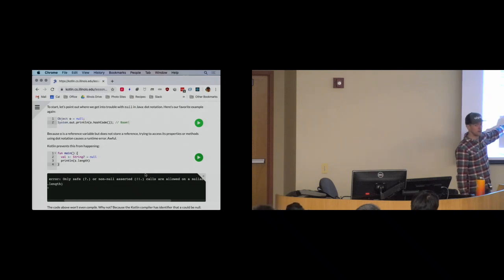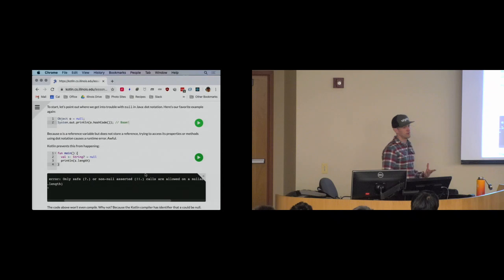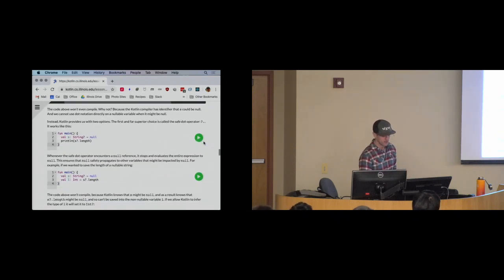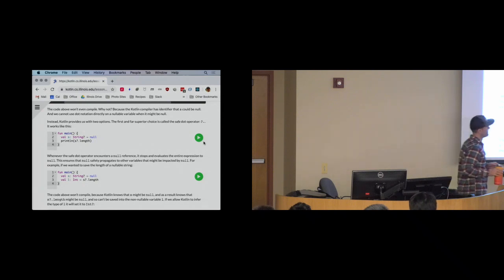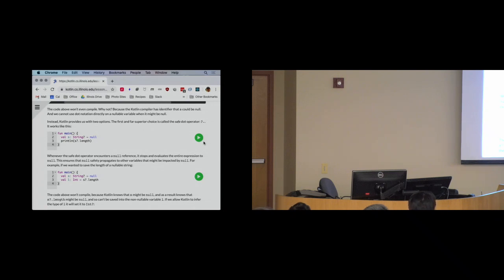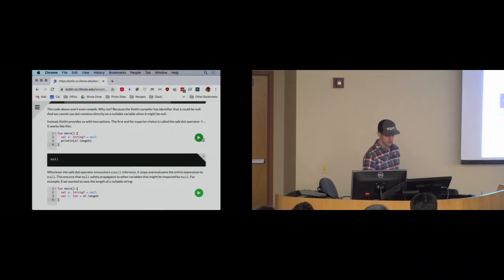Kotlin knows this variable could be null, so it stops you from working with it in an unsafe way — you can't directly access it. The safe dot operator is what you'll use most of the time. The question mark followed by a dot will try to evaluate the expression, but if it finds a null reference, it just stops and the entire expression evaluates to null. So, if s is null and I use `s?.length`, the whole expression evaluates to null — no crash, no runtime exception.